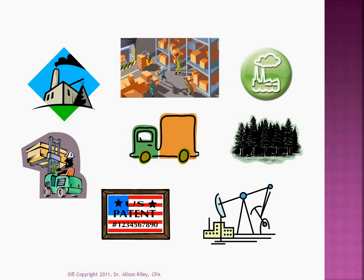What is not quite so easy to grasp is how to account for large expenditures such as the cost of a factory, delivery vehicle, pine forest, oil field, patent or copyright. These are all examples of long-lived assets used in operations that are subject to depreciation, depletion or amortisation.